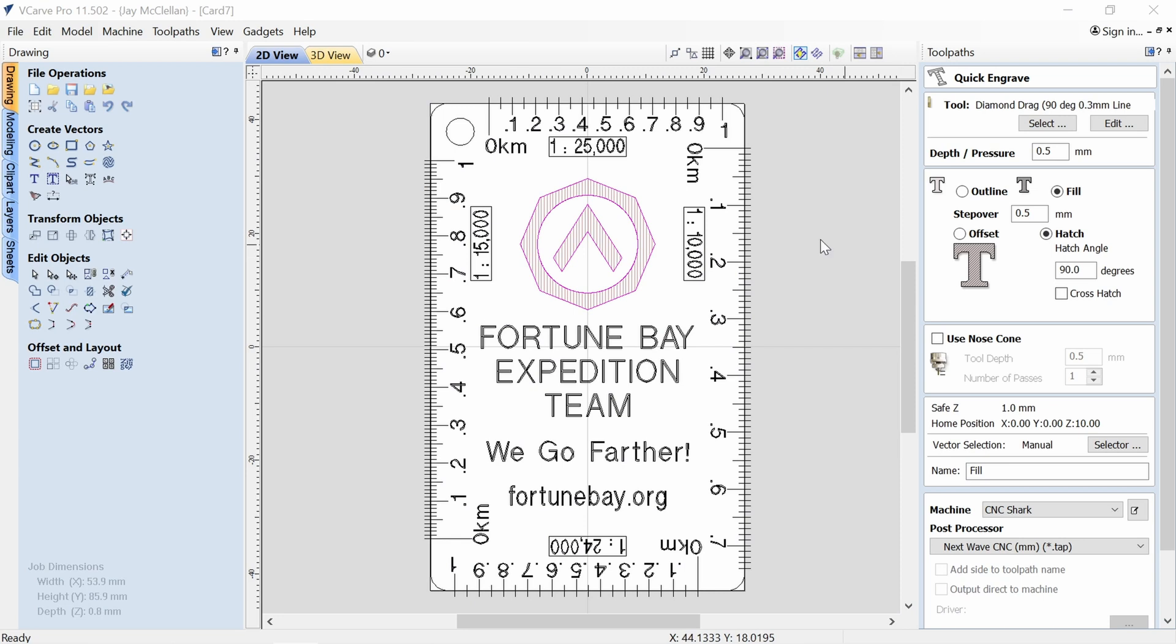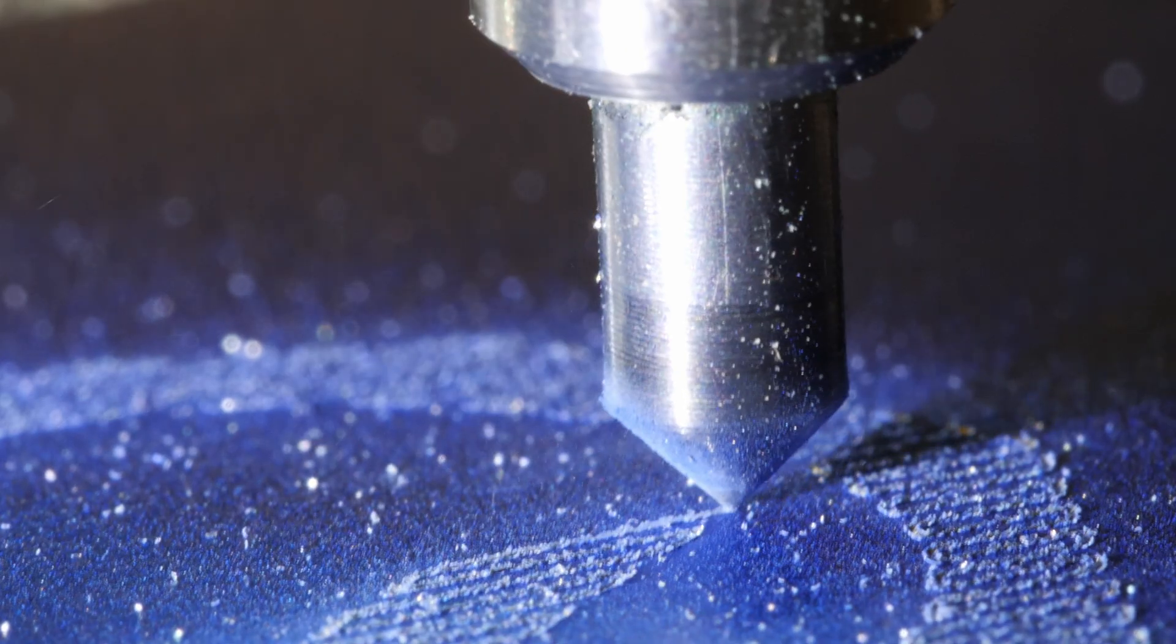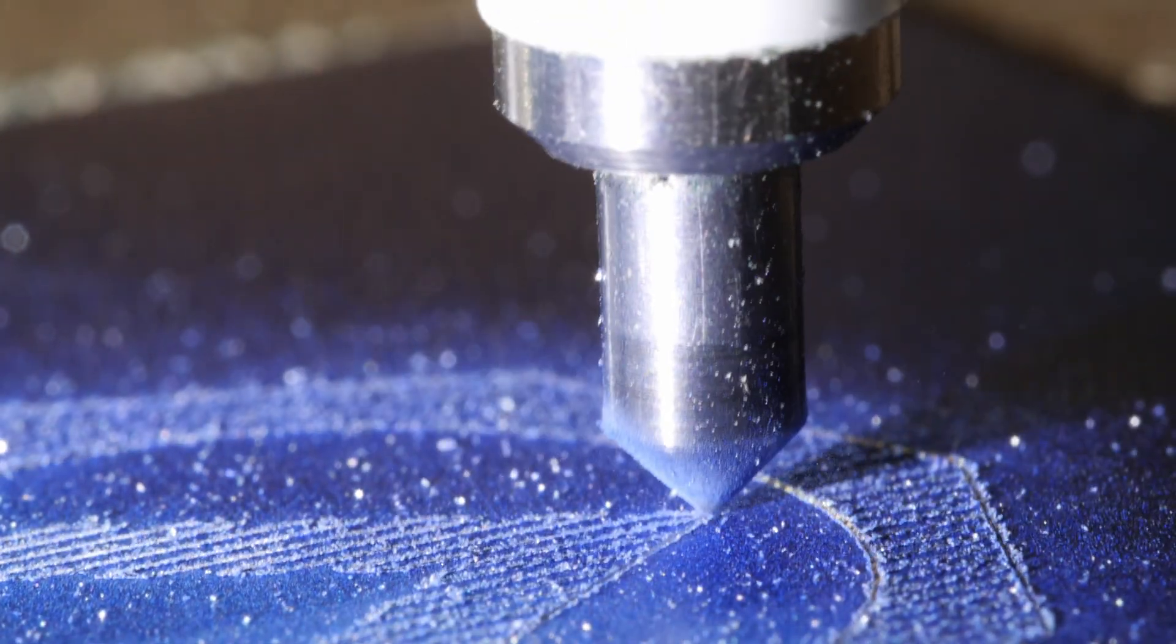Here's the quick engrave toolpath I used for making this logo, and I used the hatch option with a hatch angle of 90 degrees so that I would get vertical lines filling in the logo, and it draws these vertical lines, and then it draws the outline as well, and that gave a good result with a half millimeter step over.